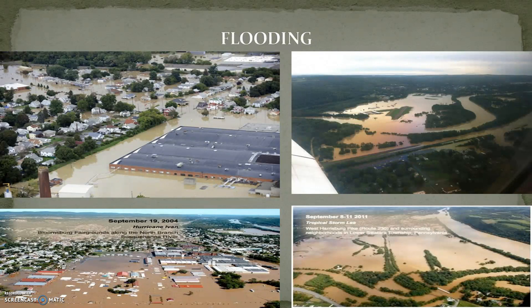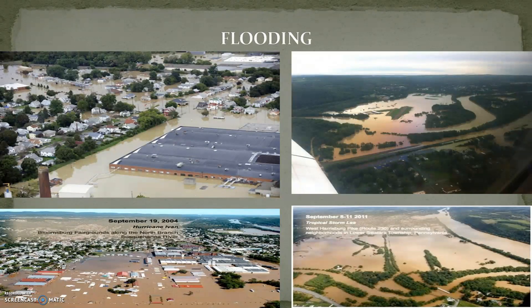The river experiences a major devastating flood on average every 14 years. The main stem has flooded 14 times since 1810. Of the 1,400 communities in the river basin, about 1,160 have residents living in flood-prone areas. The pictures on screen are from Hurricane Ivan, showing the Bloomsburg Fairgrounds along the north branch, and from Tropical Storm Lee in 2011, showing West Harrisburg Pike and surrounding neighborhoods very close to Harrisburg.